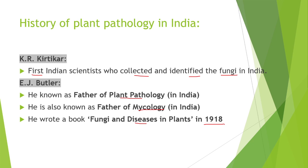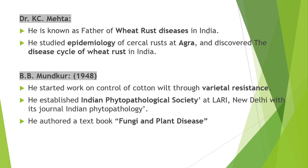Dr. K.C. Mehta is known as the father of wheat rust disease in India. He studied the epidemiology of cereal rust at Agra and discovered the disease cycle of wheat rust in India. B.B. Mundkar started work on control of cotton wilt through varietal resistance and established the Indian Phytopathological Society at IARI, New Delhi.